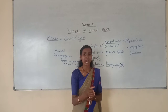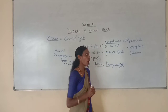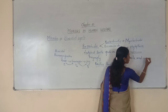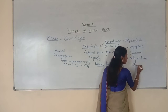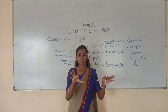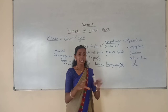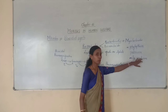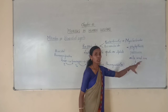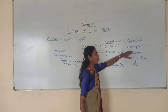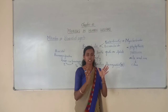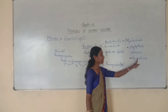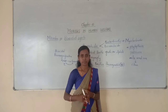In areas where citrus fruits are cultivated, the weeds commonly seen are called milkweed vine. The growth of milkweed vine can be controlled with the help of a fungus called Phytophthora palmivora. This Phytophthora palmivora is a fungus which will not allow the growth of milkweed vine in citrus orchards.